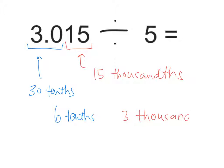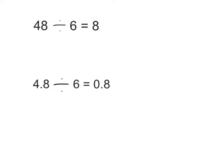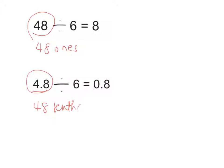So the answer is 6 tenths and 3 thousandths. In standard form I need a 6 in the tenths place and a 3 in the thousandths place. Now we can see that these two math problems have the same numbers — a 4 and an 8 divided by a 6, with a quotient of 8. In the bottom problem you still have a 4 and 8 next to each other, the divisor is still 6, and the answer still has an 8. But what is different? In the first problem the quotient is 48 ones. In the second problem, we still have 48 of something — 48 tenths — so the quotient is 8 tenths.